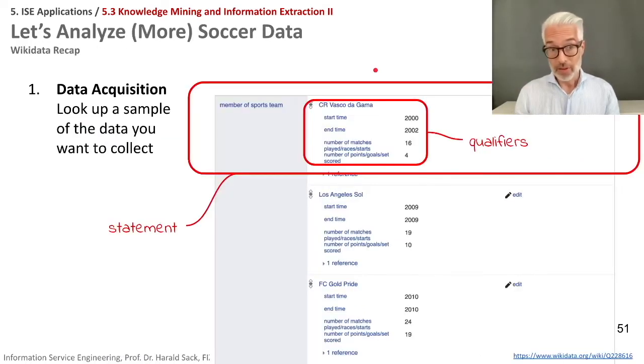For that, let's do a brief recap what we see there. You know already how Wikidata pages are organized. You have here statements which consist of, of course, the subject is always the page you're looking at and then you have here the properties and then you have here property values.